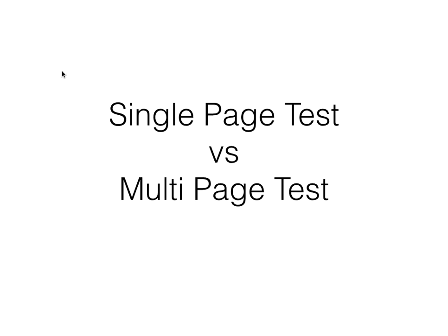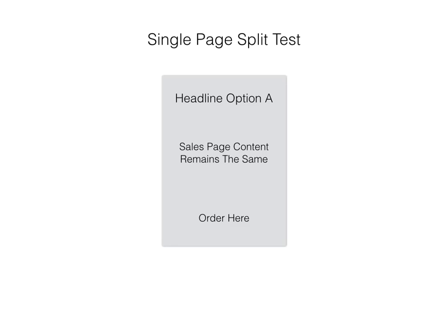First of all I'm going to talk about a single page test. On a single page test you send all of your traffic to your sales page and then within the sales page itself the test will happen. Some people that arrive at that page will see your option A, some people will see your option B. Everybody arrives at the same page — option A and option B are both on that same page but it only shows option A to some people and option B to other people.